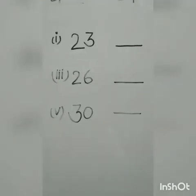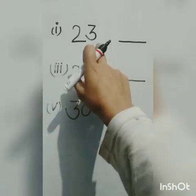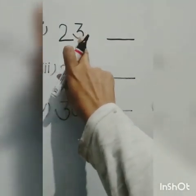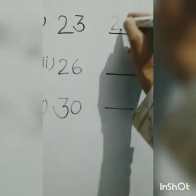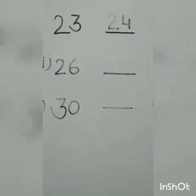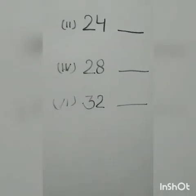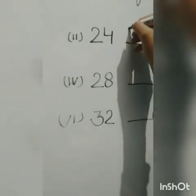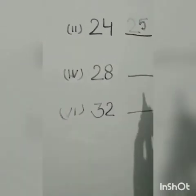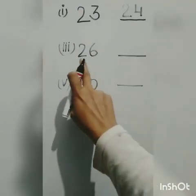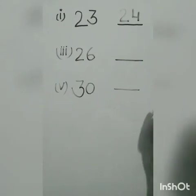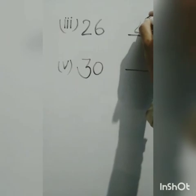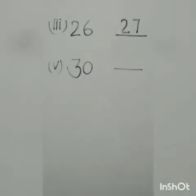As you see, here is 23. What comes after 23? It is 24. So write here 24. After 24, what will we write? 25. Now what comes after 26? 27. So you will write 27.